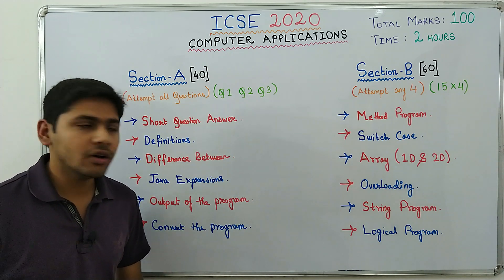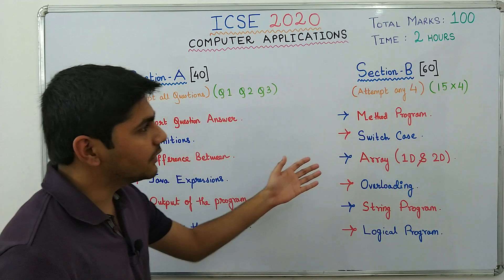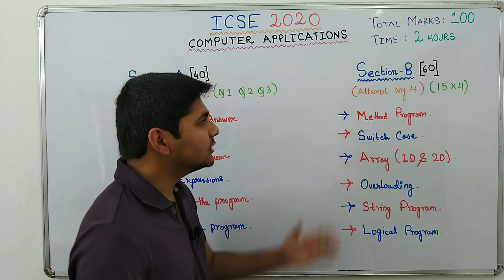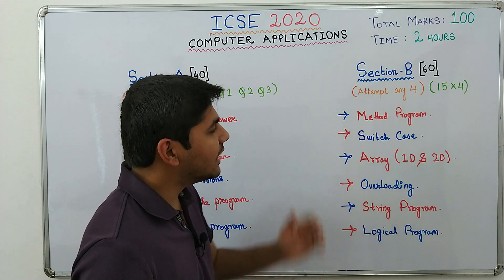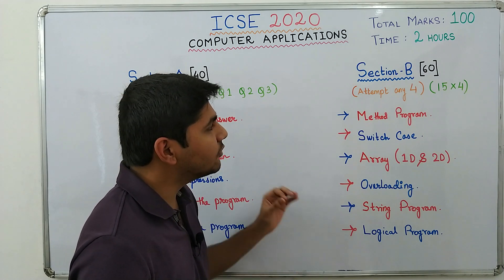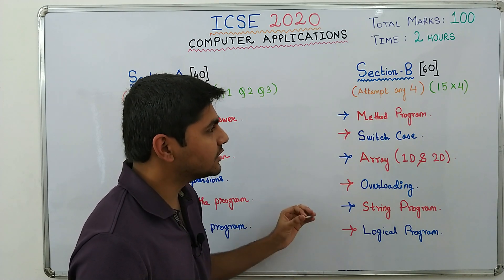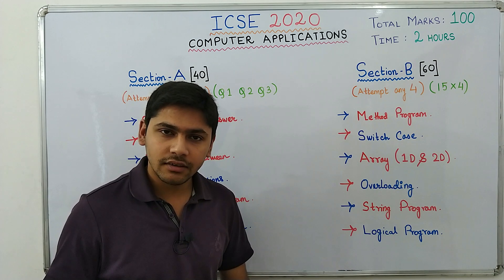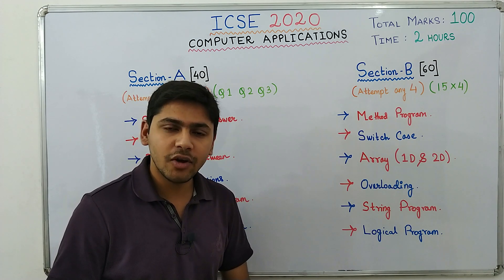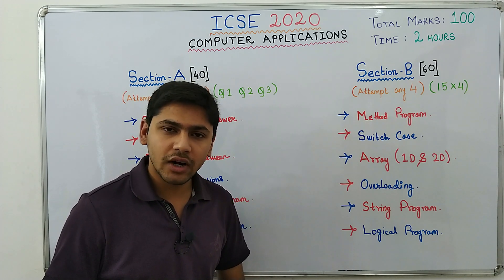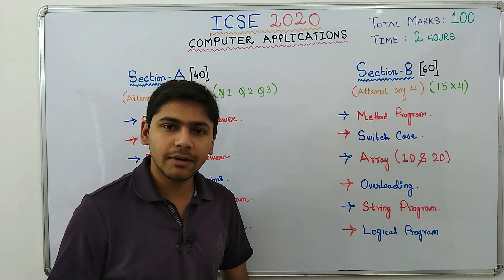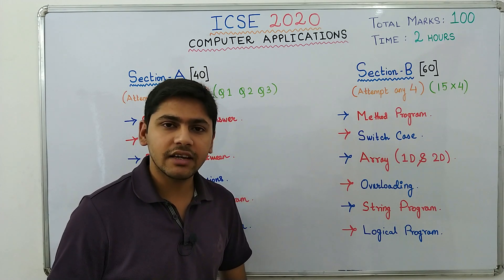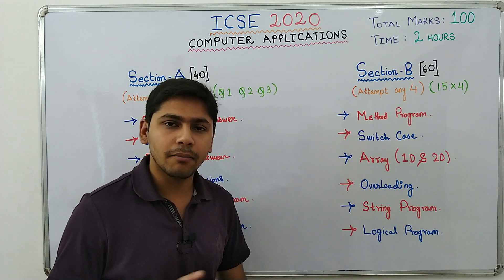Now let's move on to Section B — the programming section. Section B is of 60 marks. You will have to attempt any four questions out of a total of six programs. Each program will be of 15 marks, so four into 15 gives you 60 marks.